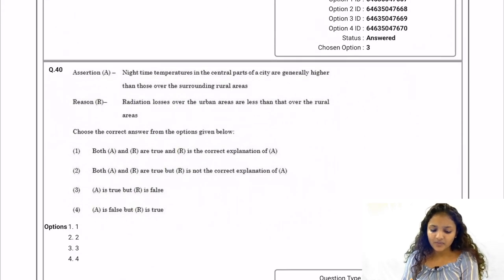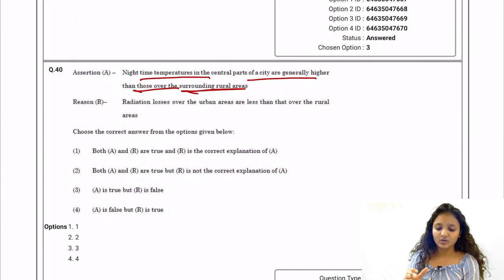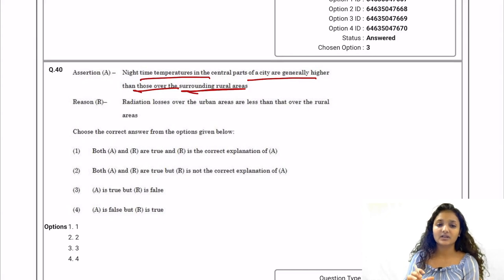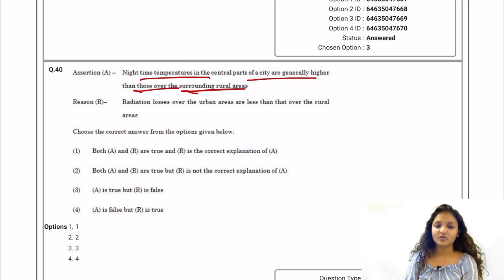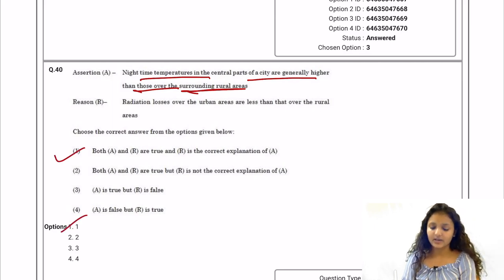Question 40: Assertion — nighttime temperatures in central parts of a city are generally higher than those over surrounding rural areas. Reason — radiation loss over urban areas is less than over rural areas. The reason is the correct explanation for the assertion. Option one is correct — both A and R are true and R is the correct explanation of A.